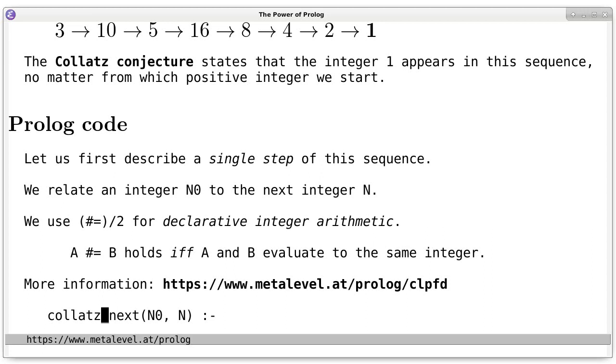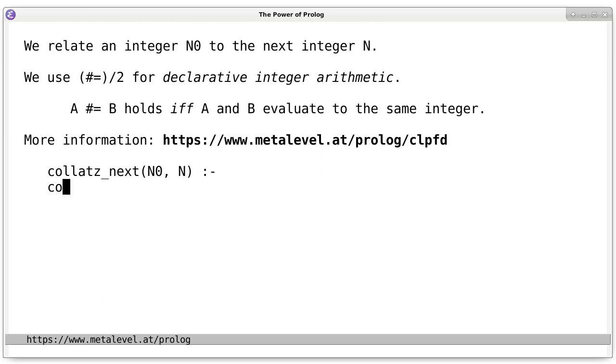And now, let us think about the cases that make this predicate true. Basically there are only two possible cases: n0 being even and n0 being odd. And since these cases are disjoint, let us consider them in separate clauses.